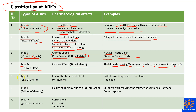Type E stands for end of treatment. Withdrawal symptoms can be seen — for example, morphine addiction and withdrawal. Type F stands for failure of therapy due to drug interactions.